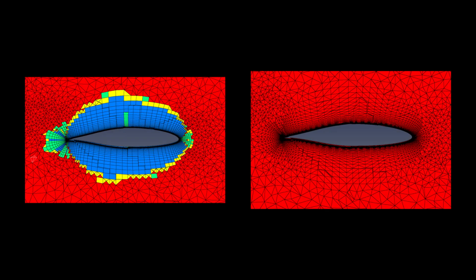You can see that the leading edge area, where the cells are very high aspect ratio, stayed primarily as prism layers, but the rest was able to convert back to hexes.